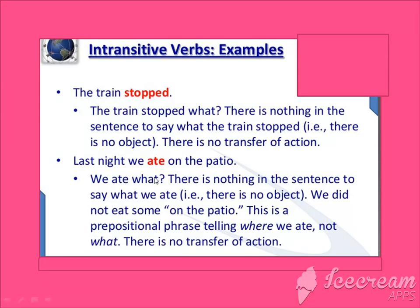Another example: 'Last night we ate on the patio.' We ate what? There is nothing in the sentence to say what we ate — there is no object. 'On the patio' is a prepositional phrase telling where we ate, not what. There is no transfer of action, so 'ate' here is an intransitive verb.